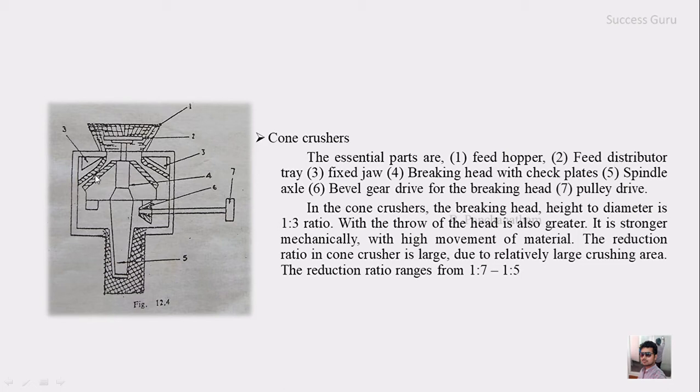There is a spindle followed by the bevel gear which will pass the rotation action and then drives the breaking head. There is a pulley drive which controls the movement of the bevel gear. The cone crusher breaking head height to diameter ratio is 1:3 and the throw of the head is also greater.